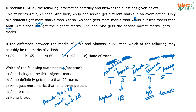Which of the following statements is true? First: Abhishek gets the third highest marks — not true, Abhishek gets the highest marks. Second: Anoop definitely gets more than 90 marks — not true, Anoop gets less than 90 since Abhinash has 90. Third: Amit gets more marks than only three persons — yes, Amit scores more than only Ashish, Abhinash, and Anoop. The correct answer is option C.